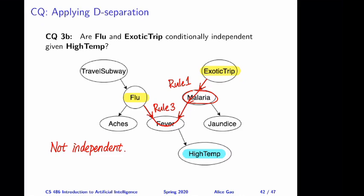That's everything for this video. After watching this video, you should be able to: given any Bayesian network, pick any two variables and a third set of observed variables, and apply d-separation to determine whether the two variables are conditionally independent or not given the third set of variables. Thank you very much for watching. I will see you in the next video. Bye for now.